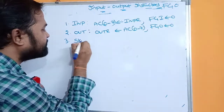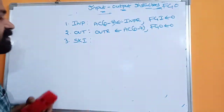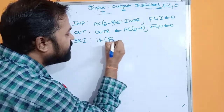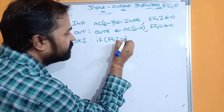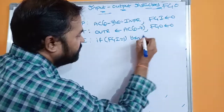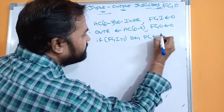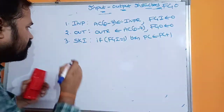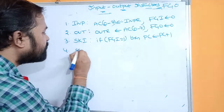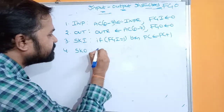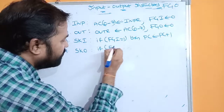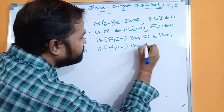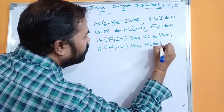The next instruction is SKI — SKI stands for Skip on Input Flag. If FGI is 1, meaning the input flag is set, the next instruction is skipped by incrementing the program counter. Similarly, SKO stands for Skip on Output Flag — if the output flag is 1, the next instruction is skipped by incrementing the program counter so it won't get executed.